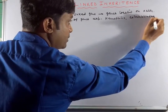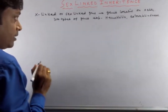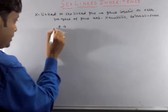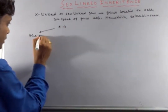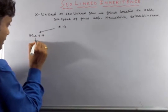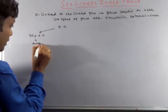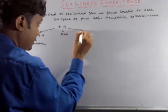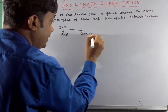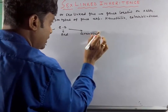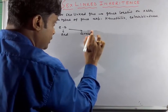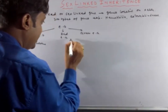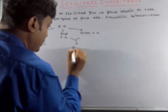Color blind people are of three types. One is blue color blind — and this blue color blind gene is located on the autosome. The other two are red color blind and green color blind, and these genes are located on the X chromosome.